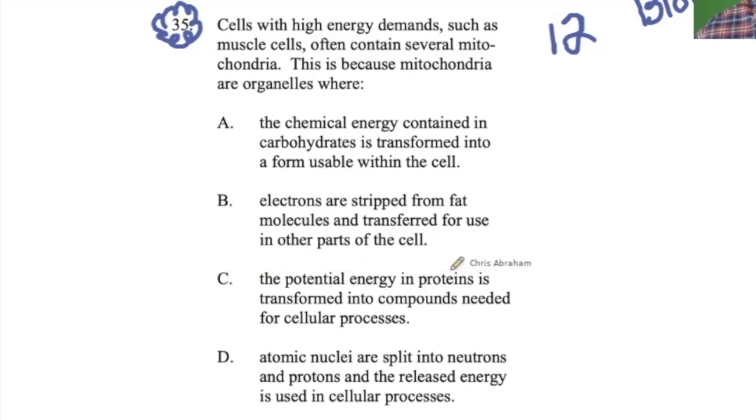C. the potential energy in proteins is transformed into compounds needed for cellular processes. D. atomic nuclei are split into neutrons and protons and the released energy is used in cellular processes.